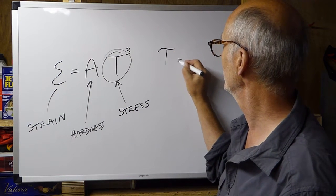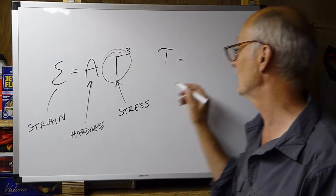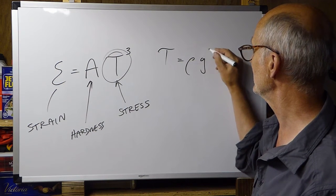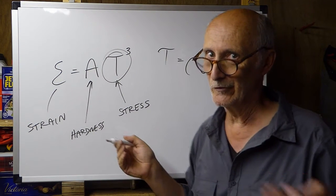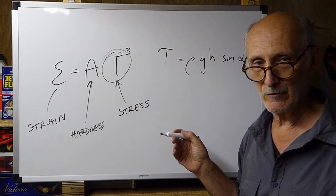Well, the stress, tau, is given by, and this is the shear stress equation, rho g h and the sine of alpha. More numbers. Let's explain those in a bit more detail.